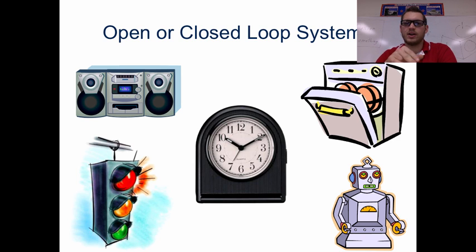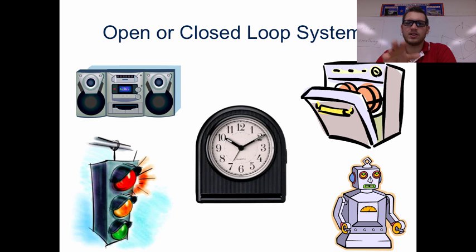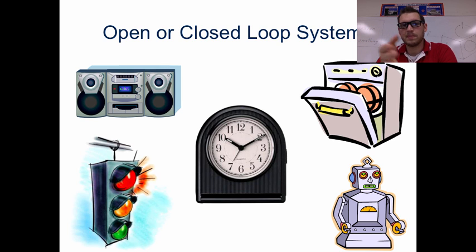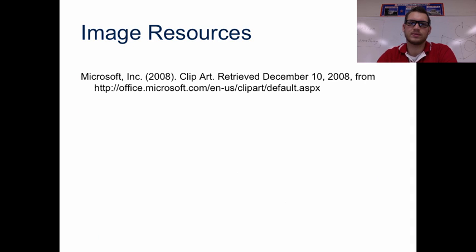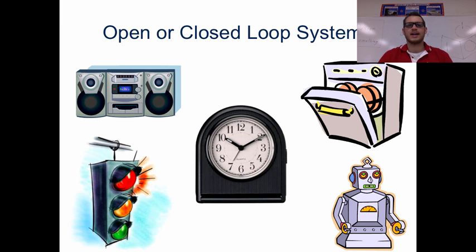Open or closed loop system — you tell me. We have a few different things here: a clock in the middle, a dishwasher on the top right, a fictitious robot on the bottom right, a radio on the left side, and a stoplight. Which of these is open, and which of these is closed? I want you to take these pictures and write out which one you think is open and which one you think is closed, and we're going to discuss it in class tomorrow. Thanks, and I'll see you in the morning.